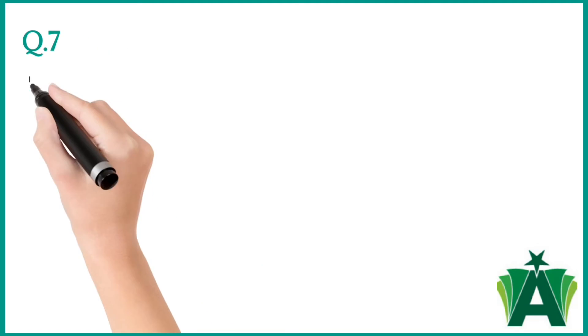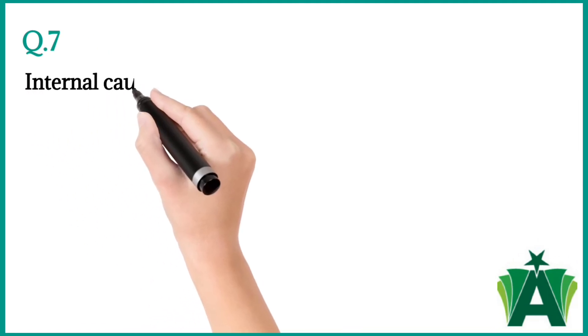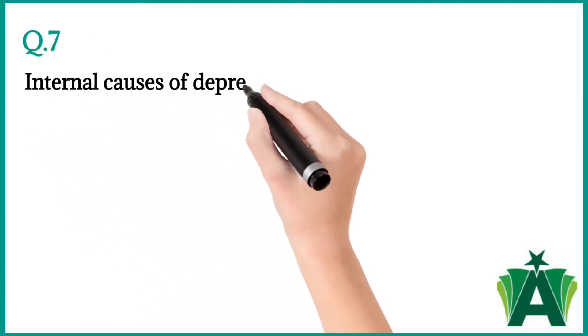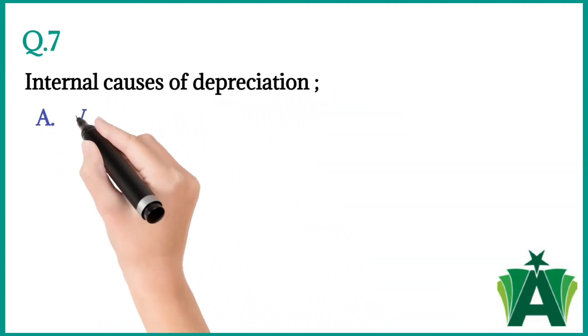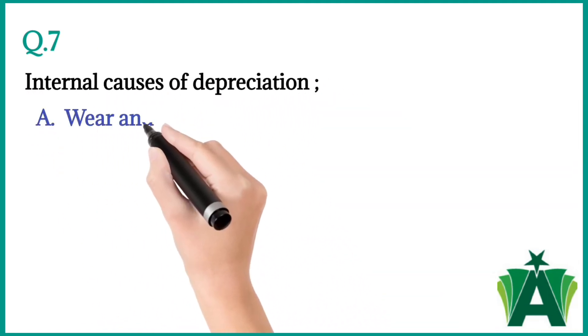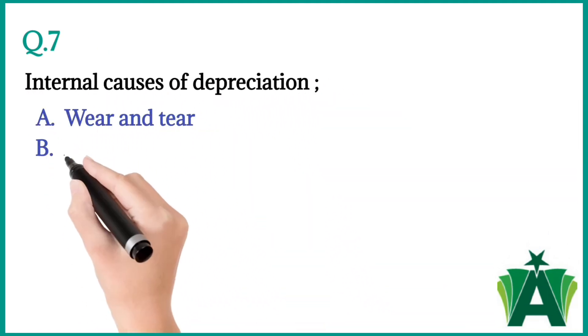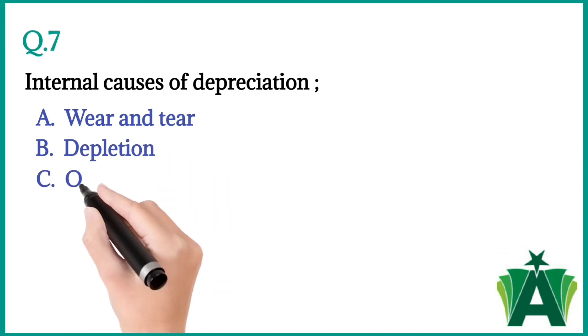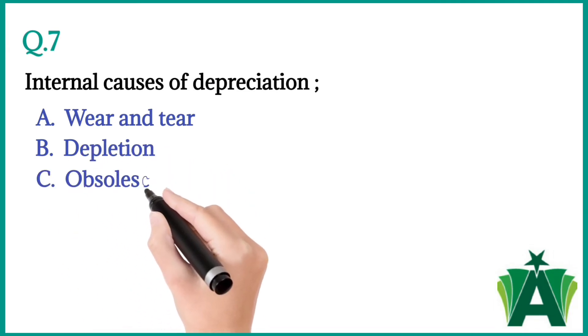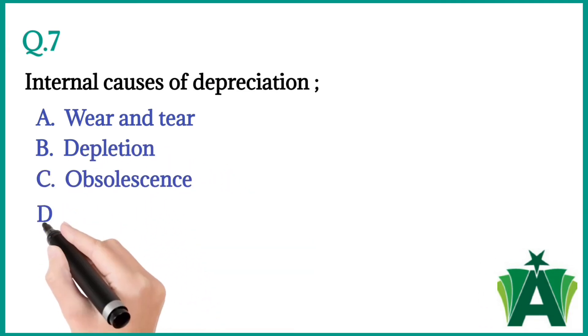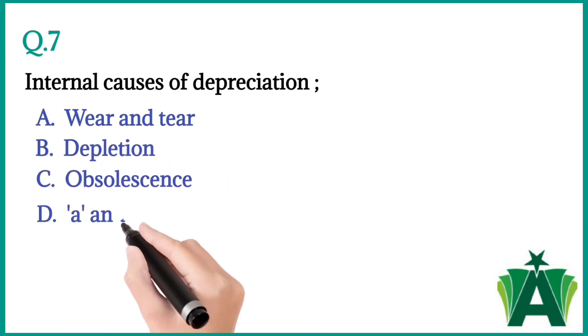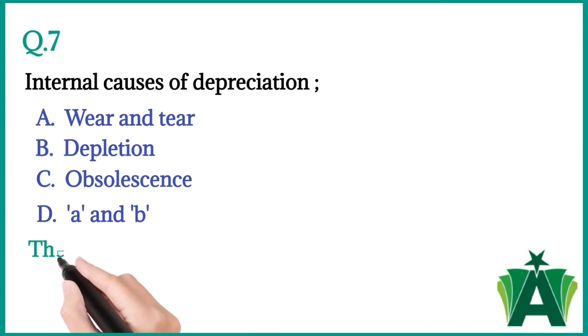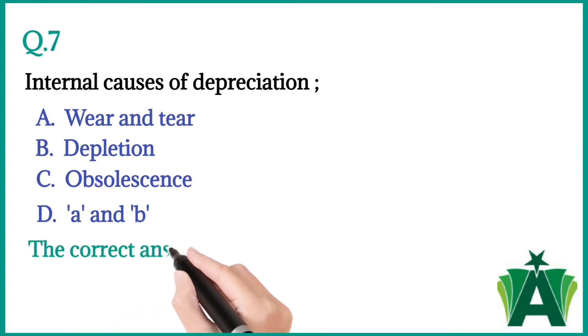Question number seven: Internal causes of depreciation — a) wear and tear, b) depletion, c) obsolescence, d) a and b. The correct answer is d) a and b.